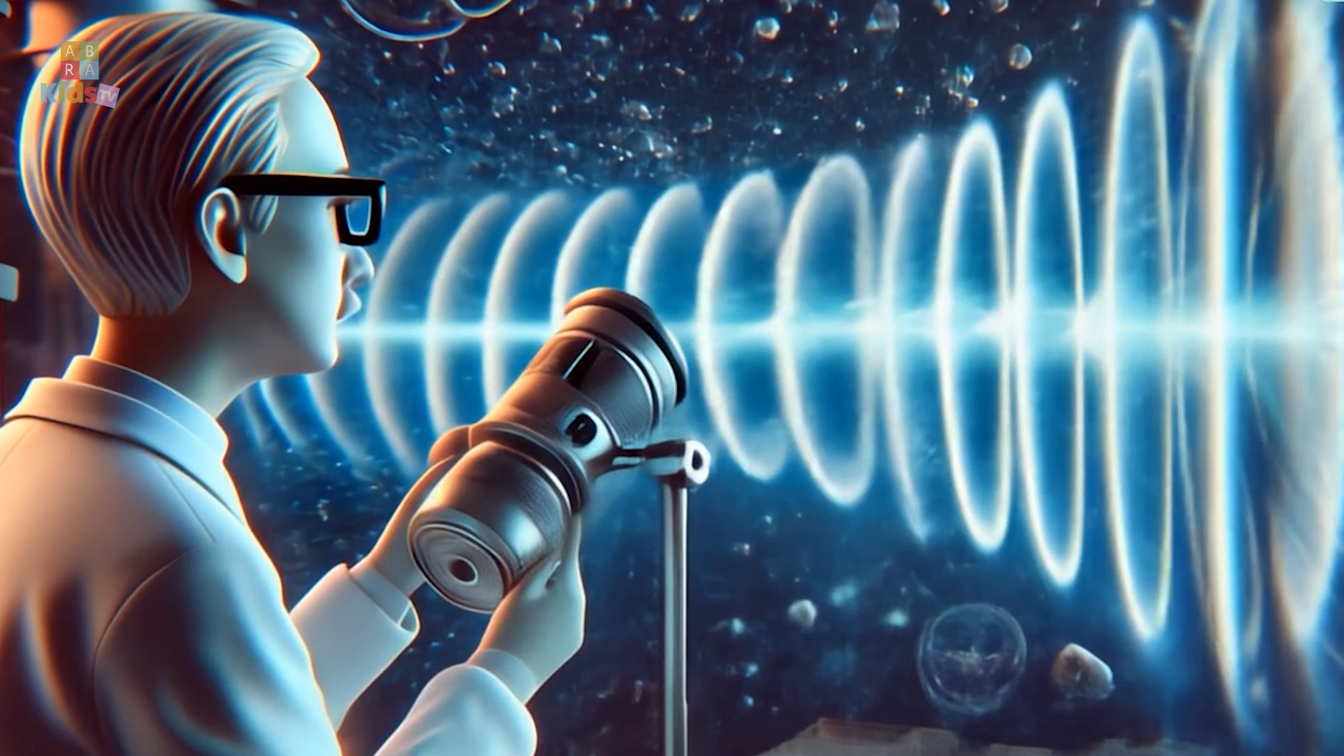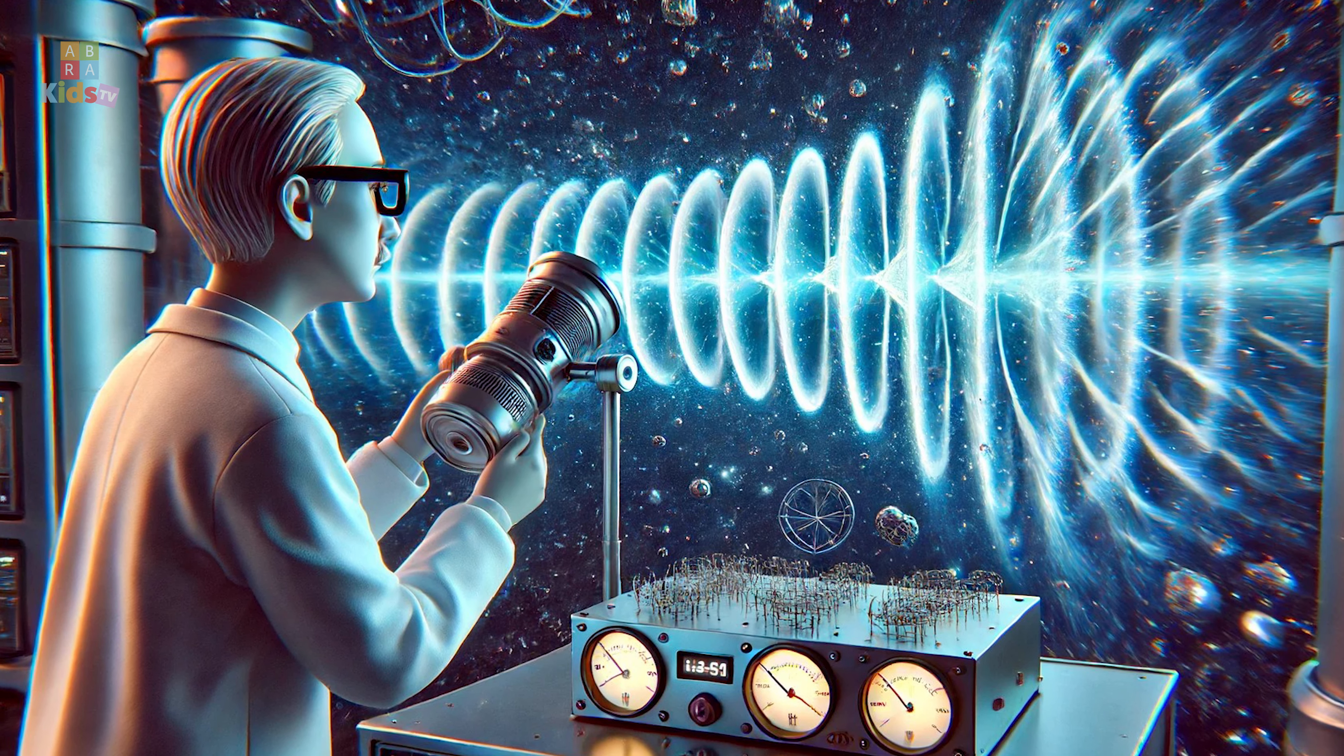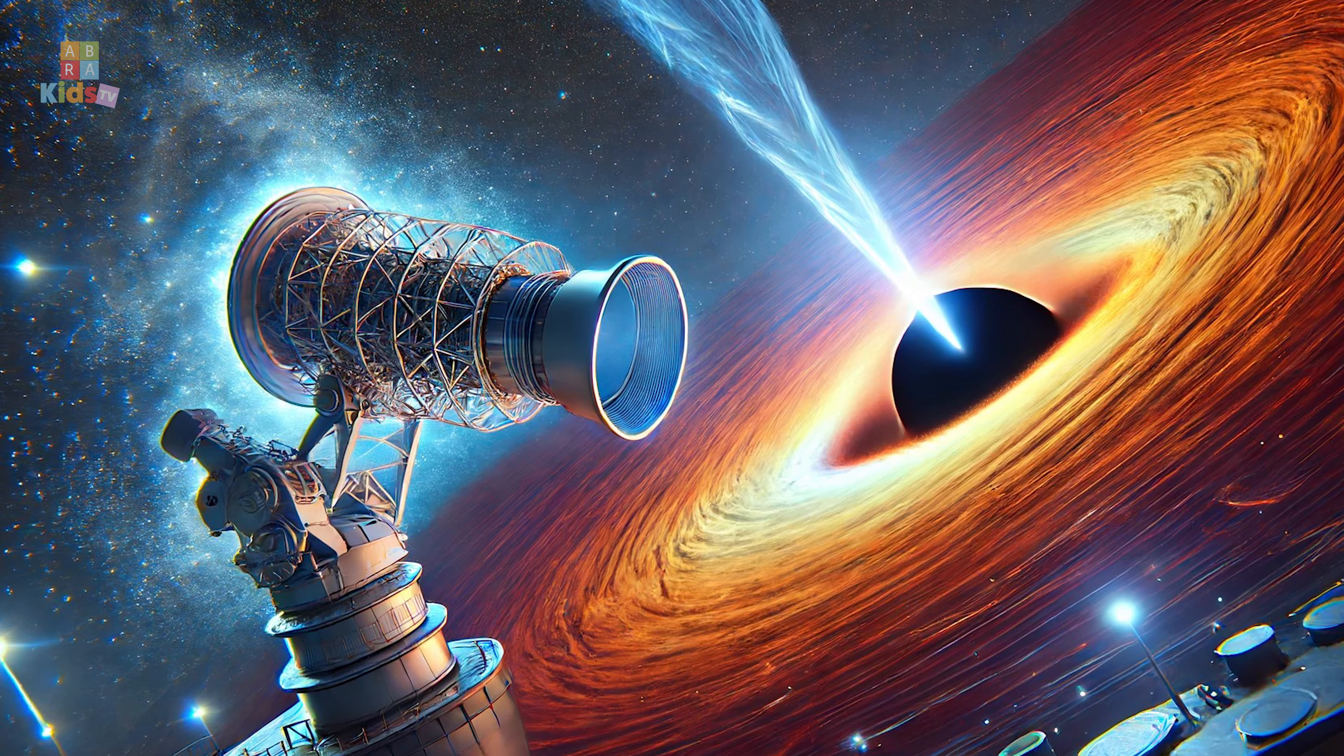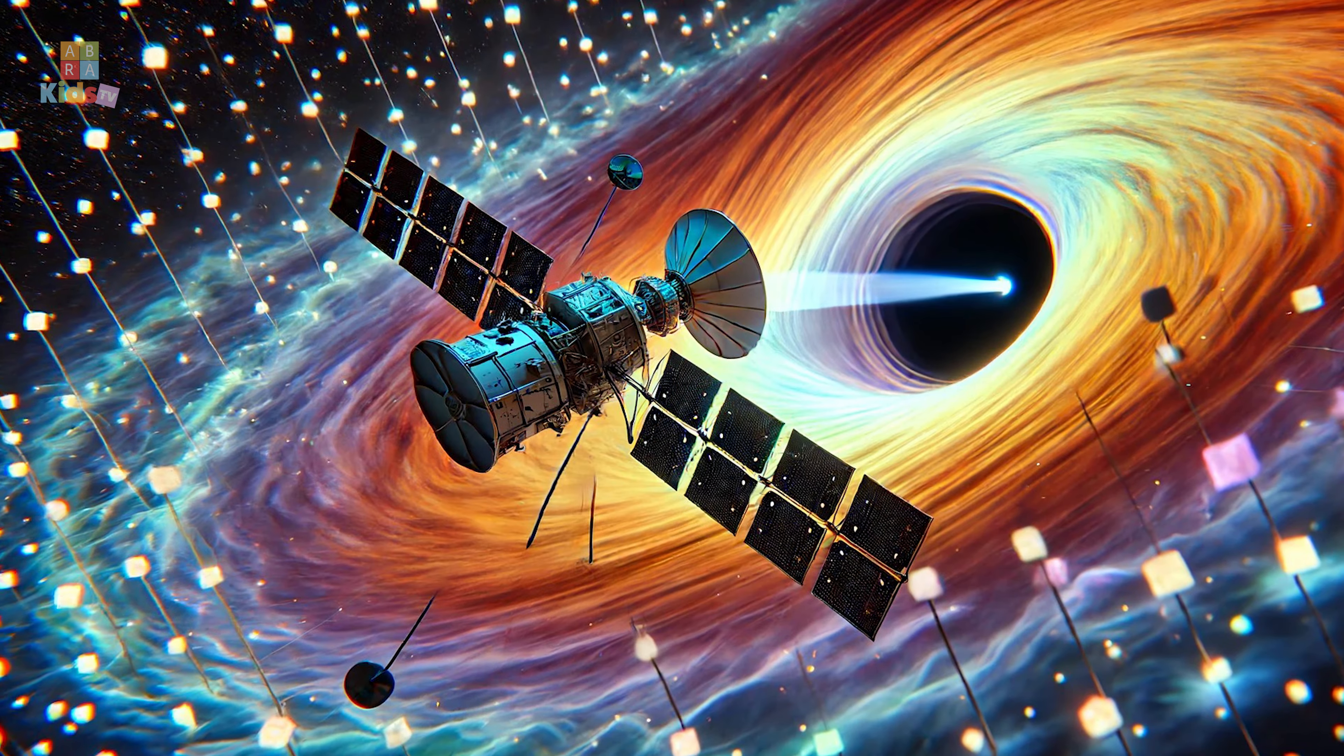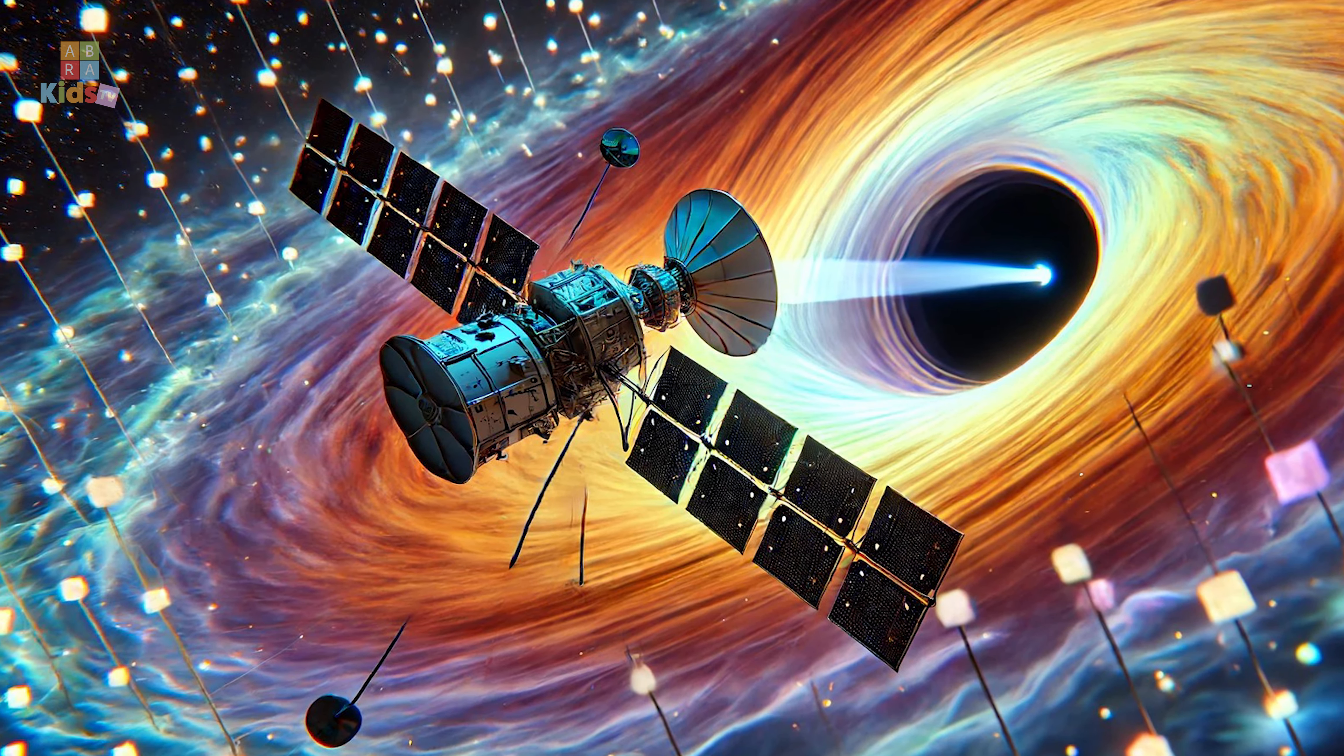Despite their name, black holes aren't entirely invisible. We can't see the black holes themselves, but we can observe their effects on nearby matter and light. Scientists use telescopes that detect x-rays and other forms of electromagnetic radiation to spot the high-energy emissions from material as it spirals into a black hole.